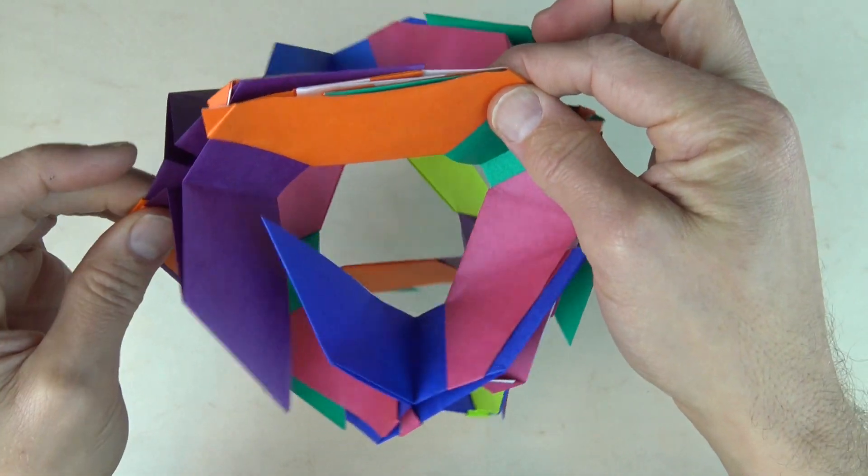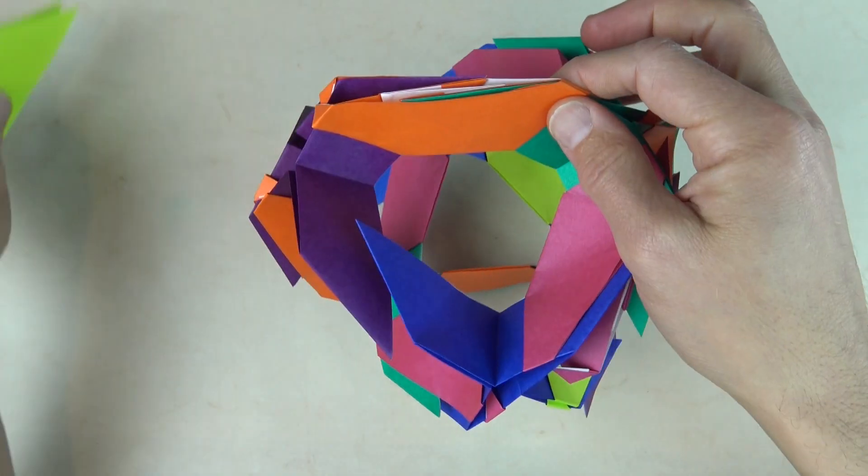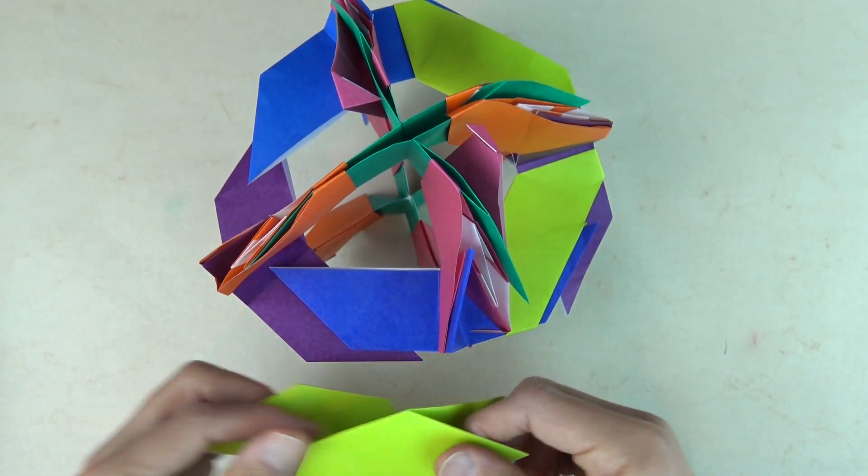Okay. So the orange ring is complete. And now I just need to finish with the yellowy green ring.